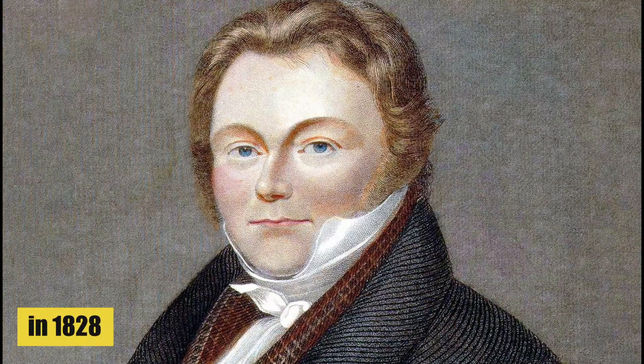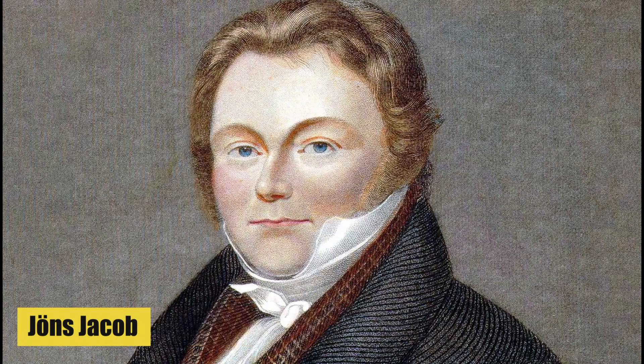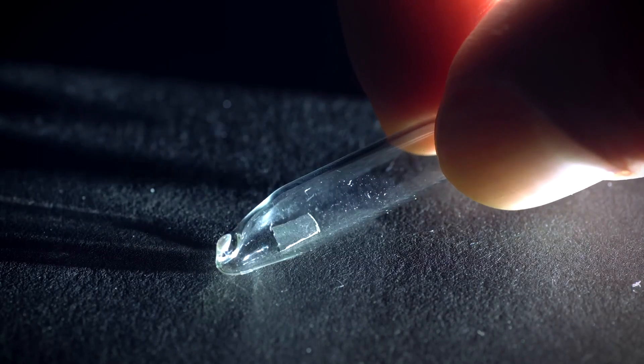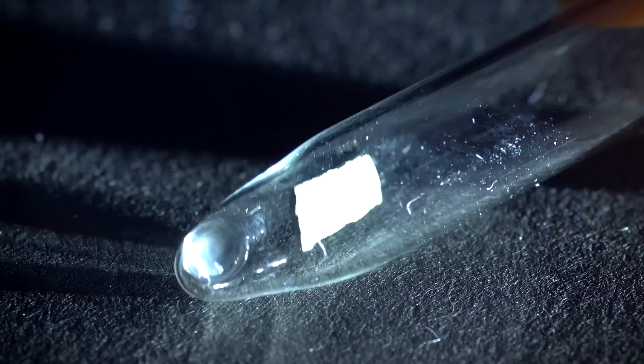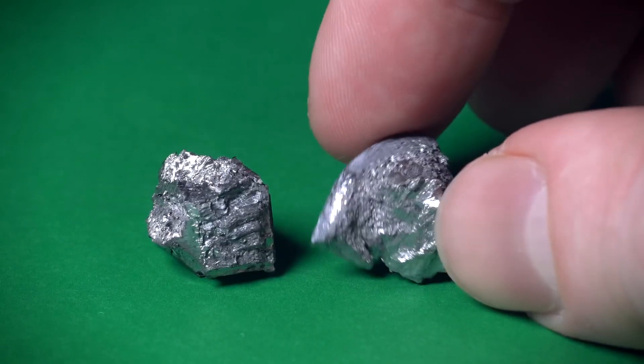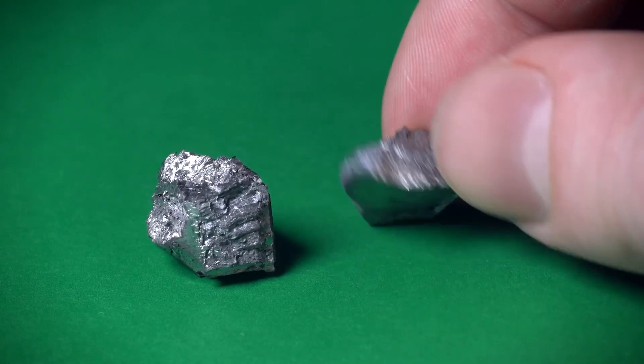In 1828, the Swedish chemist Jans Jacob Berzelius identified a new oxide, which he named thorium oxide, from a mineral sample sent to him by the Norwegian mineralogist Morten Frein S. Mark. This marked the initial discovery of thorium as an element.